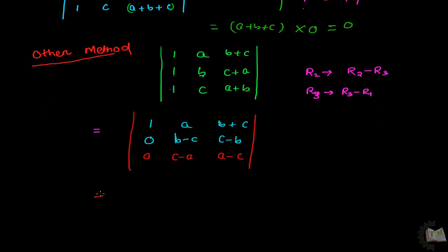Now you can calculate the determinant of this 3 cross 3 determinant matrix. In the first column two element at 0 so no need to calculate the determinant for this two element, only calculate for 1. So you can calculate the term and it will be 1 into b minus c, c minus b, c minus a, a minus c.